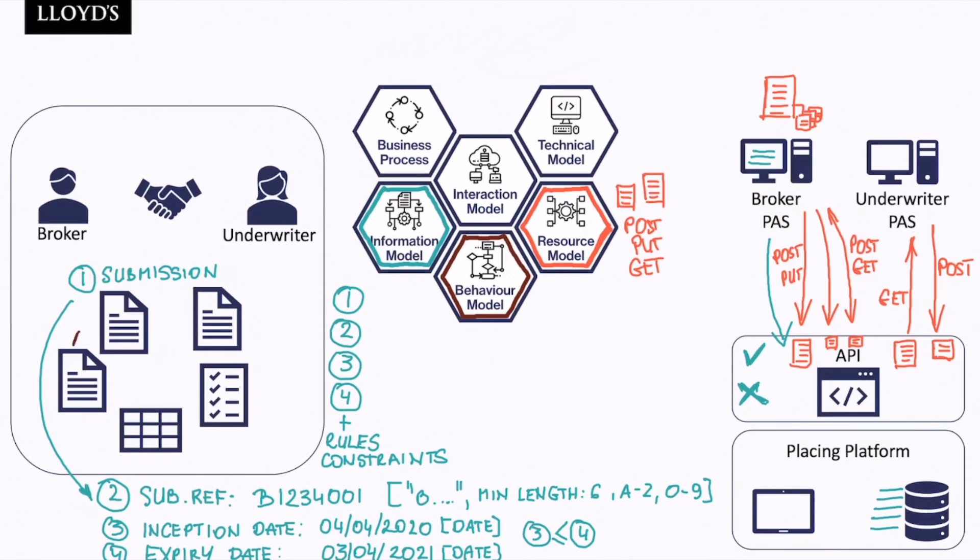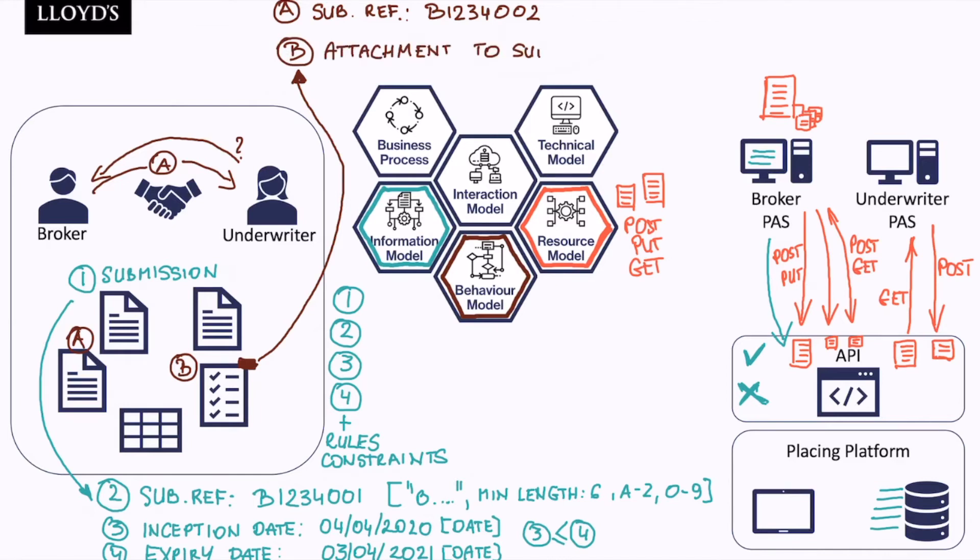Finally, let's consider a scenario: a broker approaches underwriter with a submission. Let's say the submission reference is B1234002. The underwriter then requests additional information. And subsequently, broker provides additional document, let's say B, annotating on this document that this is the attachment relevant for previously provided submission. So we have attachment to the submission reference B1234003. And we can see that there is an intentional error here because this attachment was intended for a submission reference ending with 002.